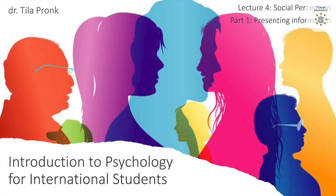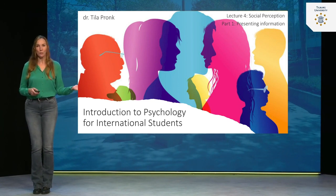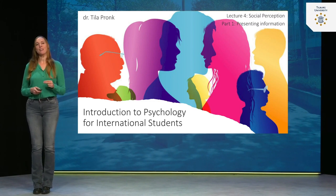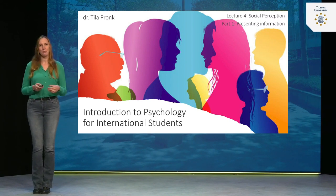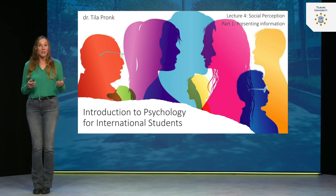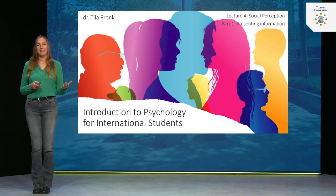This is lecture four. In this lecture we'll be talking about social perception — how we perceive people around us in our social world. But in this first part of the lecture, we'll first be talking about how information is presented to us — general information overall — not only information about people, because that's very important. Our mind is biased, and sometimes how we perceive information influences everything, and that can be very subtle.